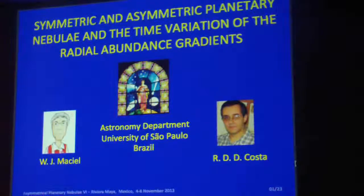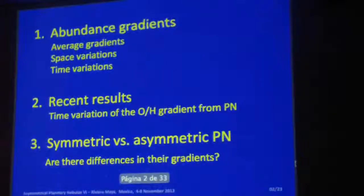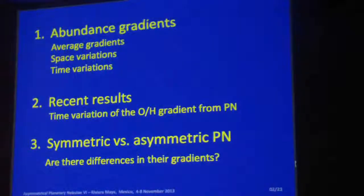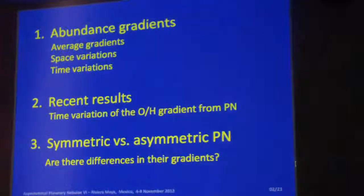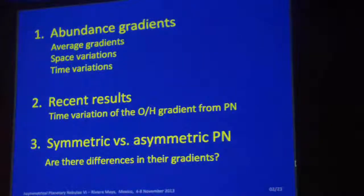This is another attempt to relate planetary nebula morphology and chemical evolution by way of abundance gradients. I will say a few words first on abundance gradients, then comment on some recent results that I have just published, and finally try to relate morphology with chemical evolution in abundance gradients, especially trying to see whether or not there are differences between the gradients of bipolar and non-bipolar nebulae.